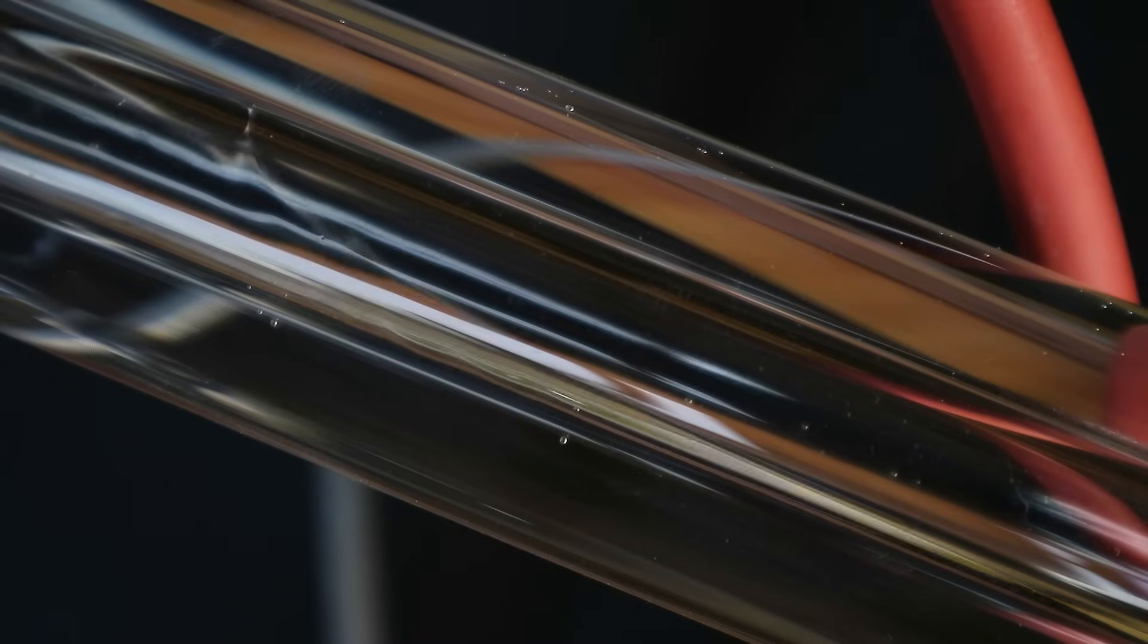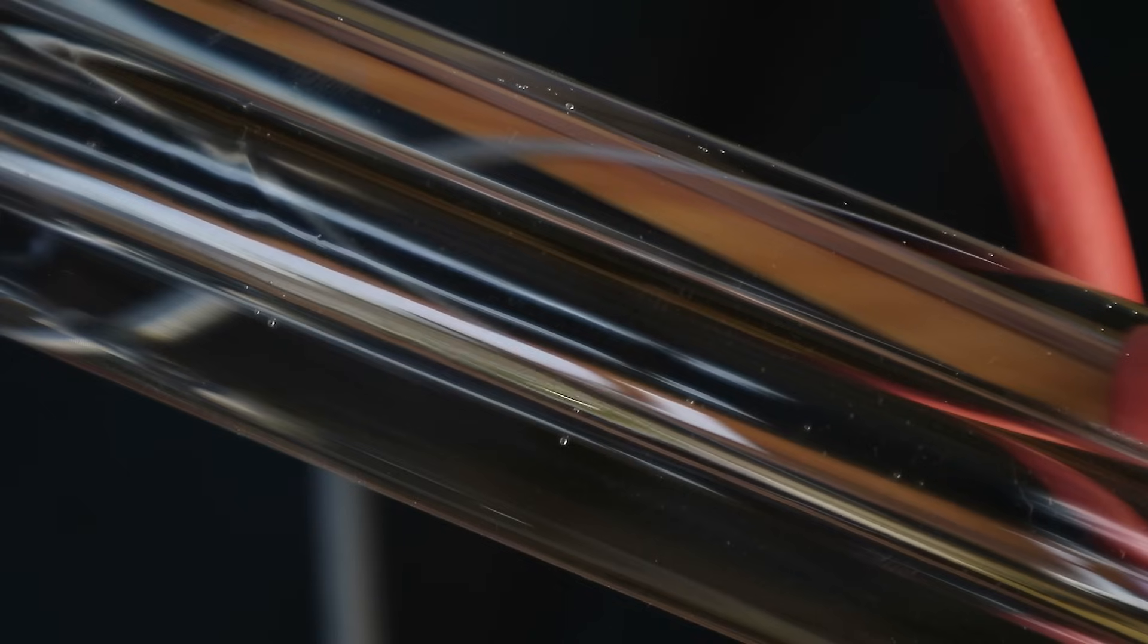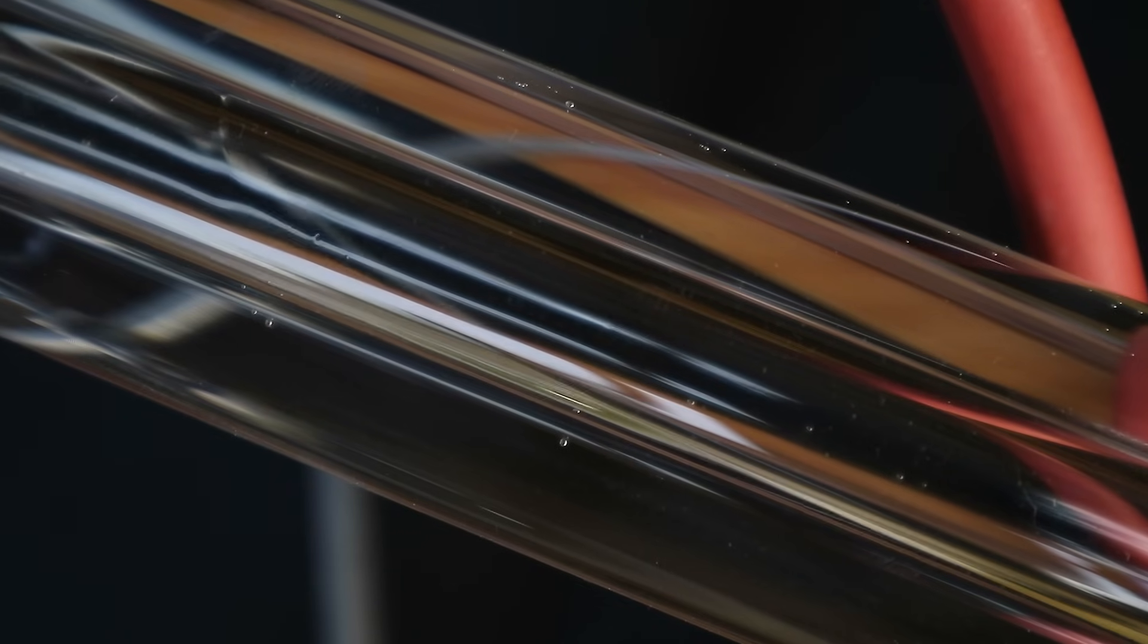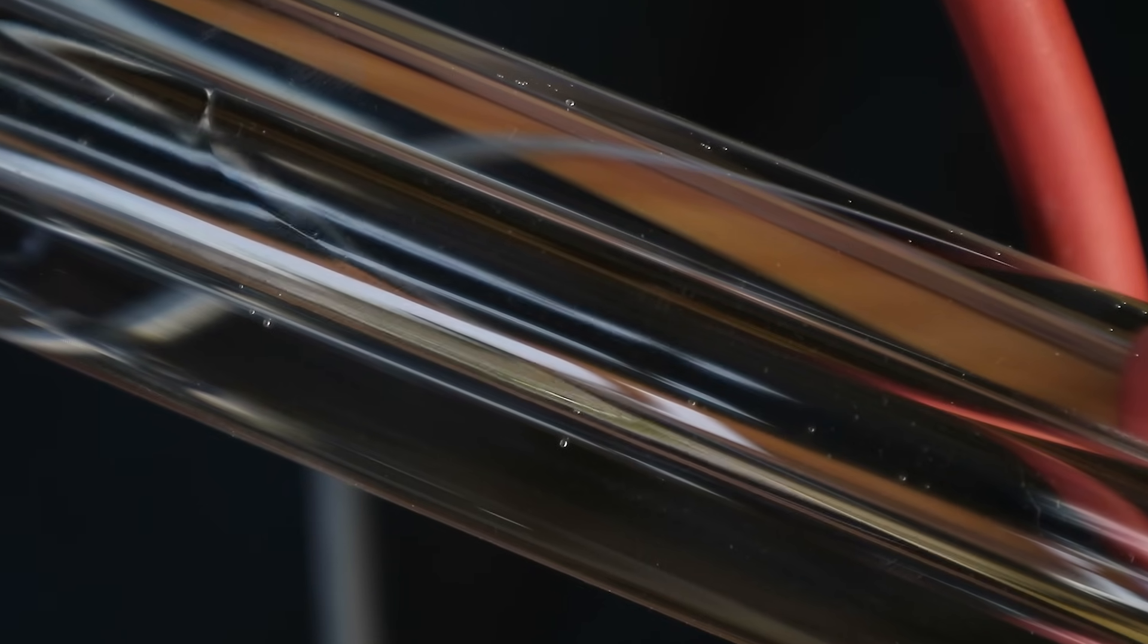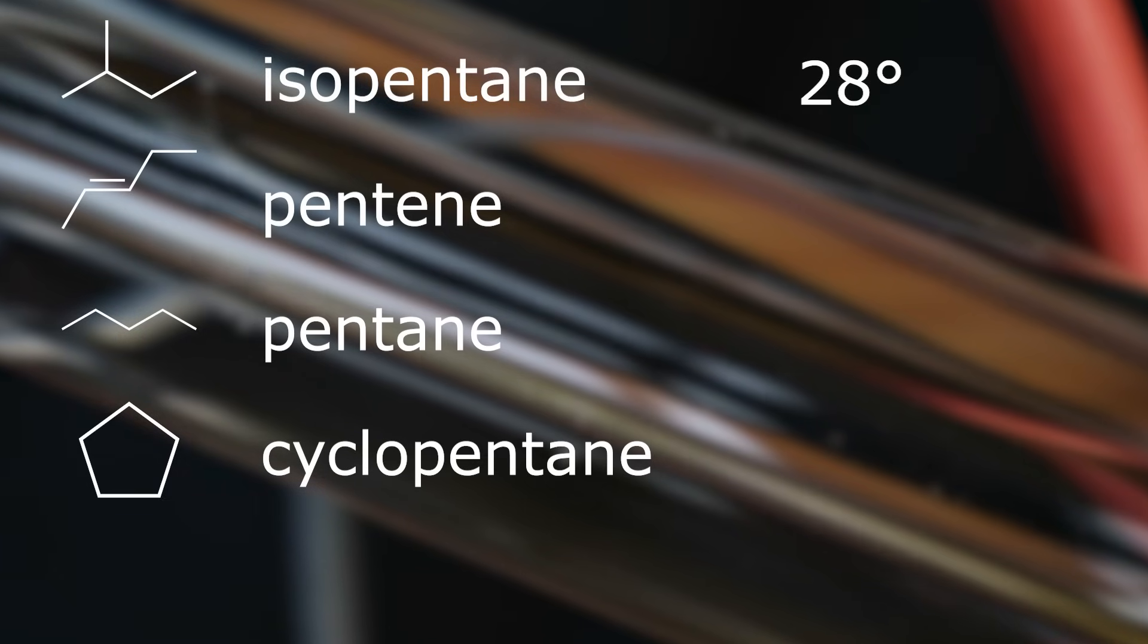What's interesting and kind of nice about the gasoline constituents is that their boiling point correlates to the amount of carbon they have in their molecules. Like for example, all the five carbon molecules will kind of evaporate one after the other, like isopentane evaporates at 28 degrees, pentane evaporates at 30 and then pentane at 36.